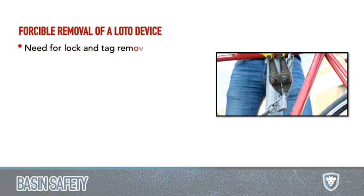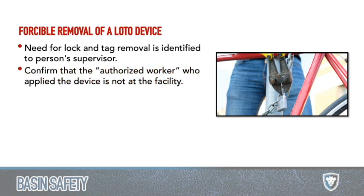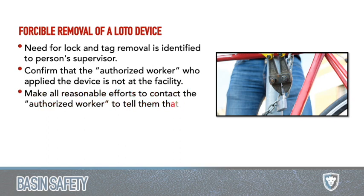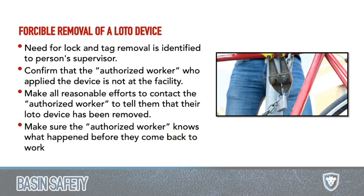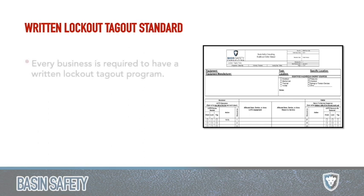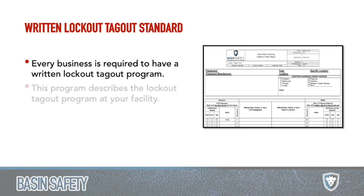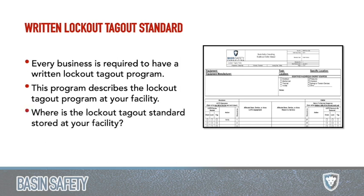If a lock needs to be forcibly removed — for example, someone went on days off or got sick — it can be done, but it needs documentation. Every effort to contact the person to remove their own lock should be made first. After documentation and every effort has been performed, then you can remove the lock, and it must be done by an authorized person. We want to document every time we perform a lockout tagout process.